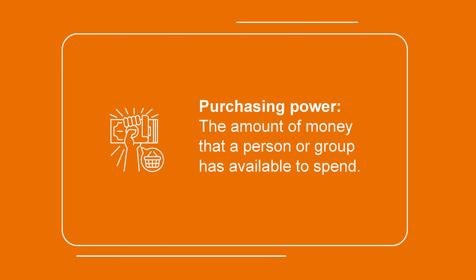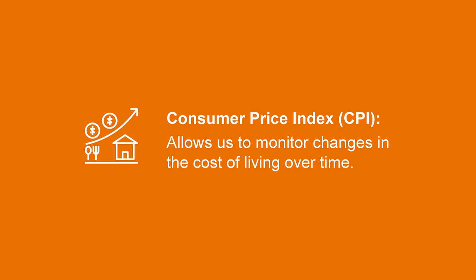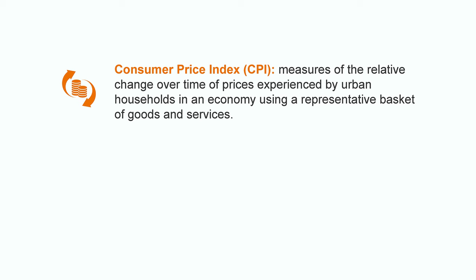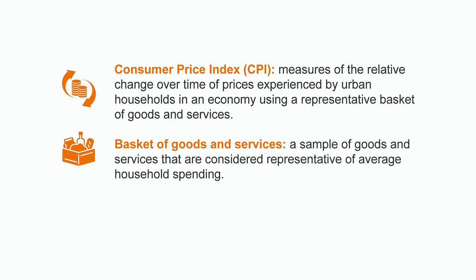With inflation, households will have less money available to spend, which means it will be more difficult for them to achieve the same cost of living. This takes us to the Consumer Price Index. The CPI allows us to monitor changes in the cost of living over time. In order for this indicator to be accurate, we have to establish which prices it is going to measure. For example, if we took into account the price of yachts, Ferraris, or jewelry, we would be giving importance to goods that are inaccessible to many parts of the population. The CPI is a measure of the relative change over time of prices experienced by urban households in an economy, using a representative basket of goods and services. This basket is a sample of goods and services considered representative of average household spending.